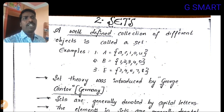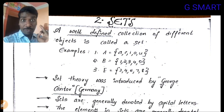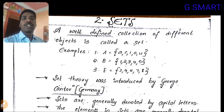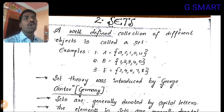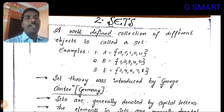What is meant by a set? A well-defined collection of objects is called a set. The definition should be well-defined. For example, A = {a, i, o, u}, B = {1, 2, 3, 4, 5}, and E = {2, 4, 6, 7, 8, 9}.